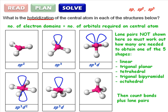Finally, we have a tetrahedral molecule. No lone pairs needed. Four electron domains, four orbitals, sp3 hybridization.